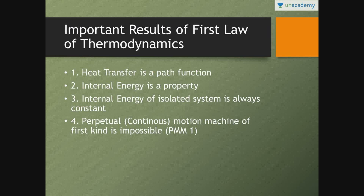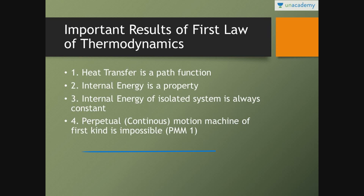There are some important results of first law of thermodynamics. From the first law for a cycle, we will deduce these: first, heat transfer is a path function; second, internal energy is a property — just like pressure and temperature are properties, internal energy is also a property, whereas heat transfer and work transfer are not properties; third, internal energy of an isolated system is always constant. We will also discuss PMM1 — perpetual motion machine of the first kind — in this lesson.